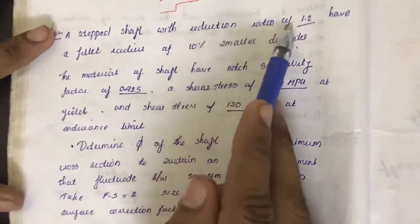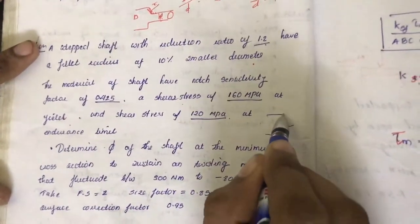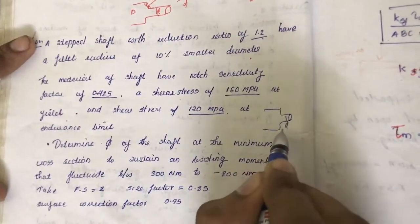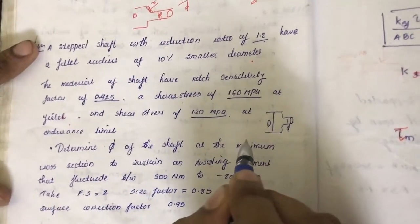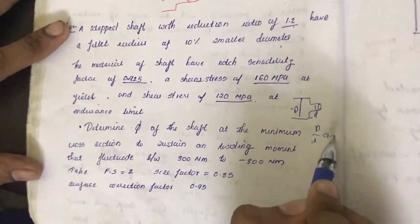So here a stepped shaft with the reduction ratio 1.2. We will be having a shaft like this with a diameter capital D here and capital D and small d here. So d by capital D is equal to 1.2, it is given in the question.